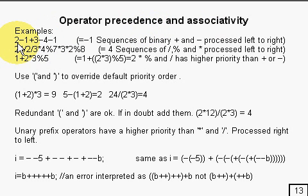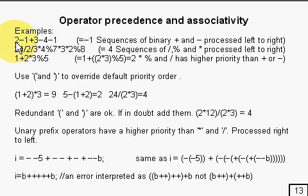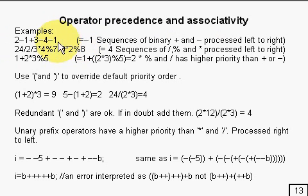Here we've got 2 minus 1 plus 3 minus 4 minus 1, and that's all done left to right. So 2 minus 1 is 1, 1 plus 3 is 4, 4 minus 4 is 0, 0 minus 1 is minus 1. So it's just straight left to right.